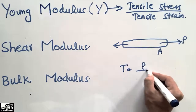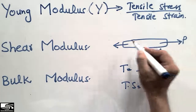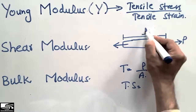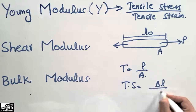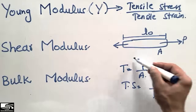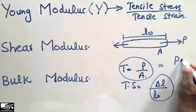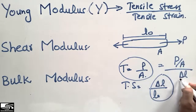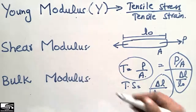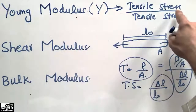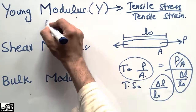Tensile stress can be defined as the load divided by area. The tensile strain can be defined as the change in length divided by the original length. The ratio of tensile stress over tensile strain we call the Young's modulus. It has the unit of tensile stress, since tensile strain has no unit. It is also sometimes called the elastic modulus.